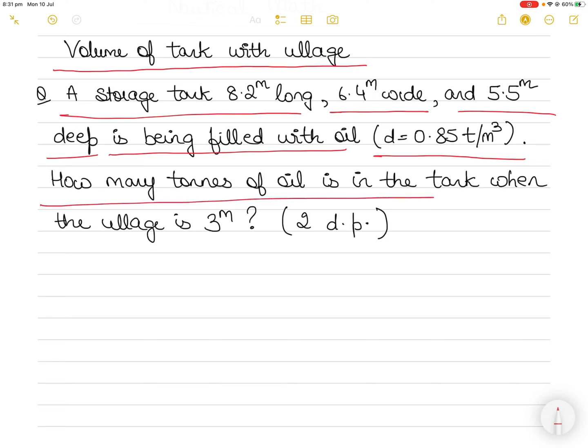The density of the oil is 0.85 ton per metric cube. How many tons of oil is in the tank when the ullage is 3 meters and you have to calculate the tons of oil, which means the mass of the oil to be loaded, up to two decimal places.